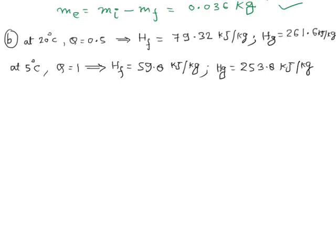In the next part, to calculate the heat transfer, we write values from the R134A table. At 20°C with quality 0.5 (50%), the enthalpy of liquid HF and enthalpy of vapor HG are noted. Similarly, values at 5°C are written. We then calculate the initial enthalpy using the formula: (1 minus quality) times enthalpy of liquid plus quality times enthalpy of vapor.